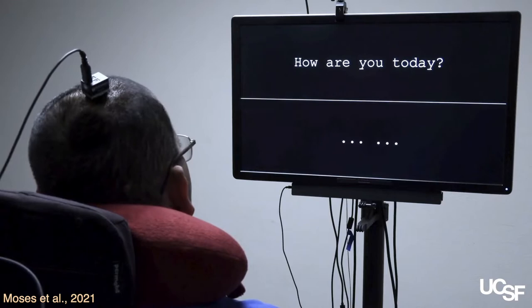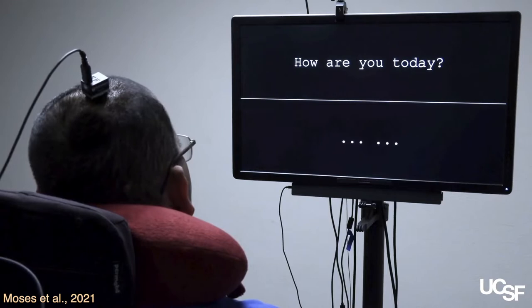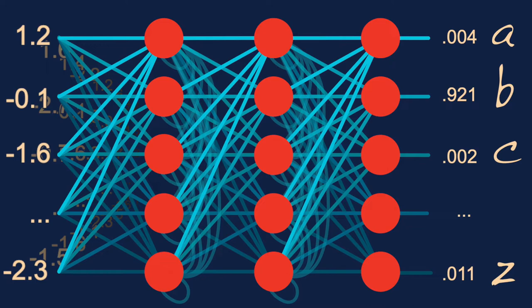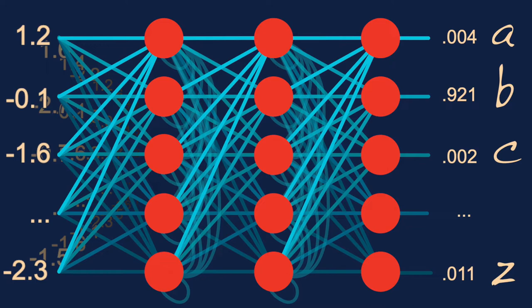In a previous episode of AI Talks, we saw how an artificial intelligence system enabled paralyzed individuals to text out messages. Two teams of scientists asked paralyzed patients to attempt to write characters or to speak words. They then taught artificial recurrent neural networks to convert the resulting brain signals into text.